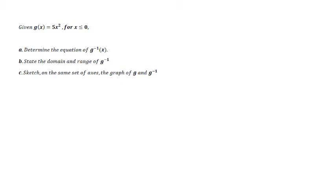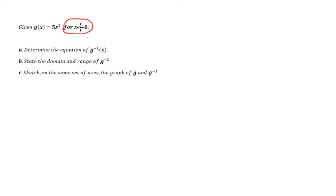The first one says that given g(x) = 5x², with the restriction x ≤ 0 — so we're only considering this parabola for the negative x values, that's the restricted domain. In part A they want us to determine the equation of g inverse. Notice that we are able to use this inverse function notation because we've restricted its domain. Then we need to state the domain and range of the inverse function, and lastly sketch those two graphs on the same set of axes.